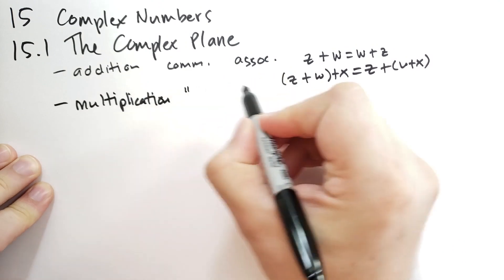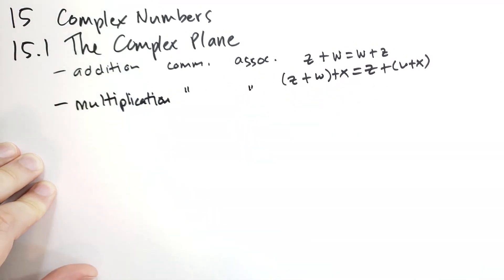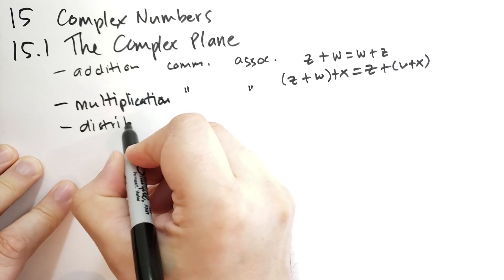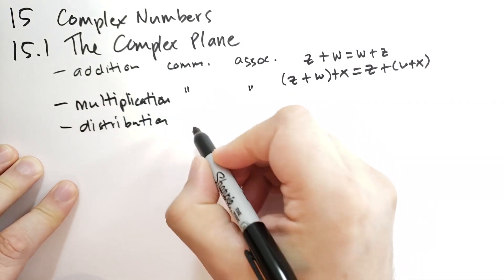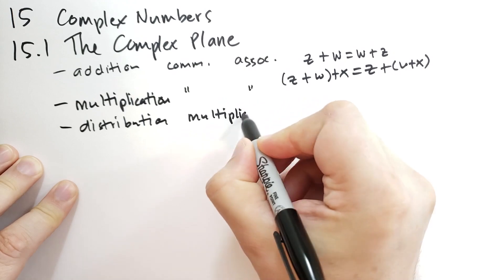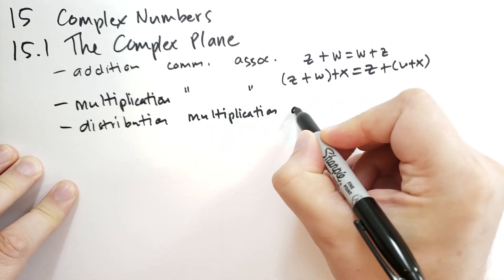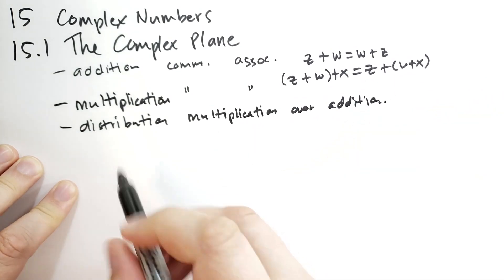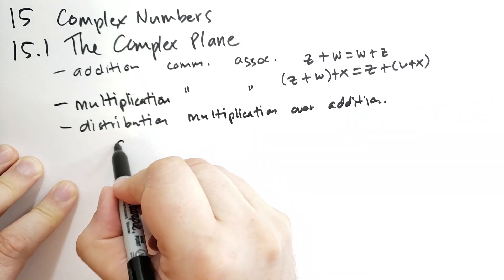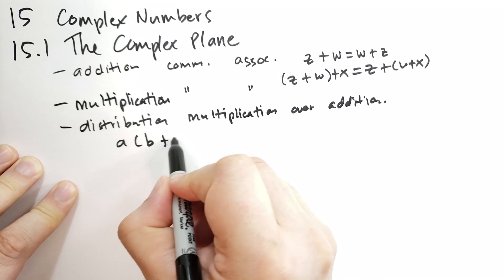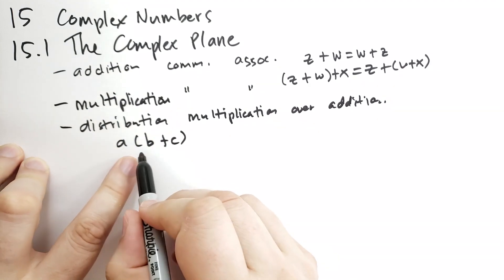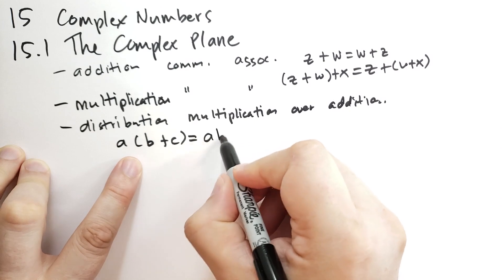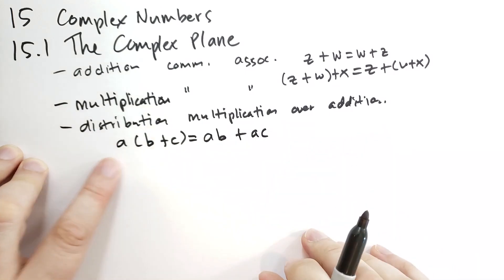Addition is commutative and associative. In addition, we have distribution of multiplication over addition. What this means is if we have three complex numbers — let's use A, B, and C — if we're multiplying the sum B and C by A, we're going to get A·B plus A·C.